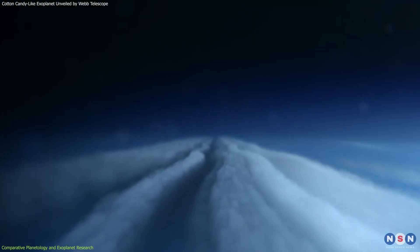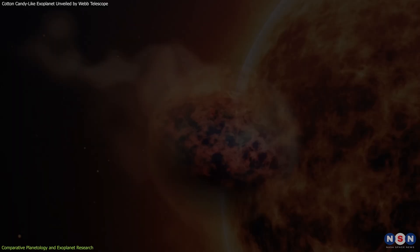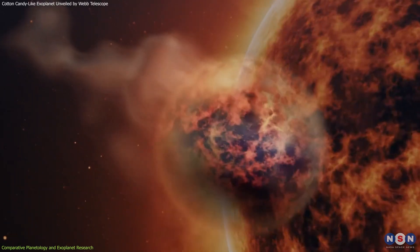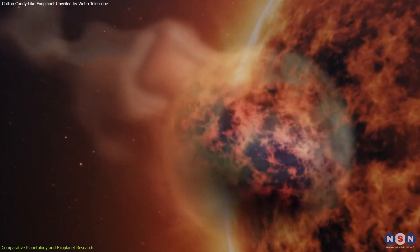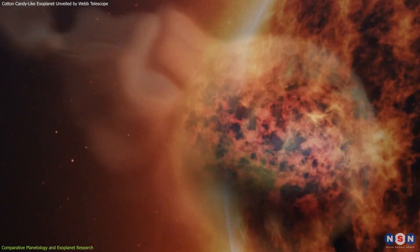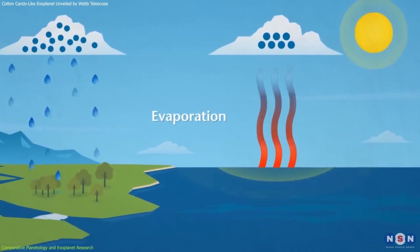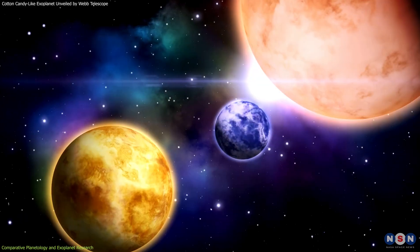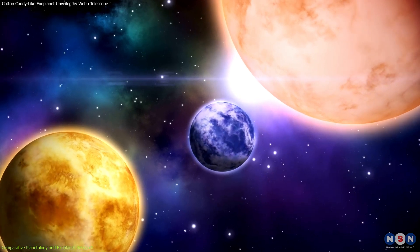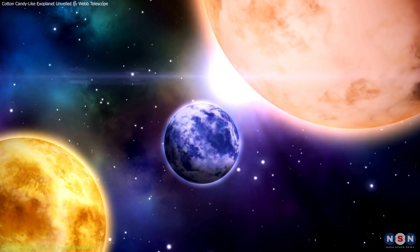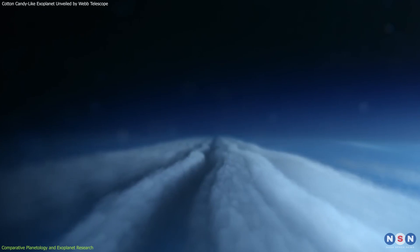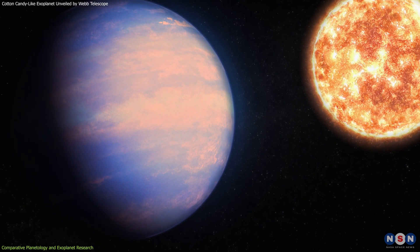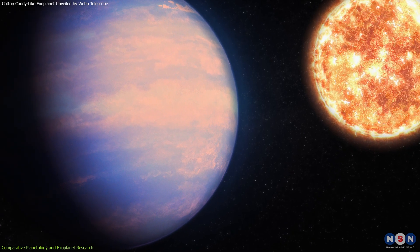The presence of high-altitude silicate clouds indicates a complex climatic system, where sand rain droplets evaporate in deeper, hotter layers and rise to recondense into clouds. This cycle, analogous to Earth's water cycle but involving silicate, highlights the diversity of atmospheric processes across different planetary environments. Understanding these unique cycles enhances our comprehension of how planets interact with their host stars and the resulting climatic conditions.